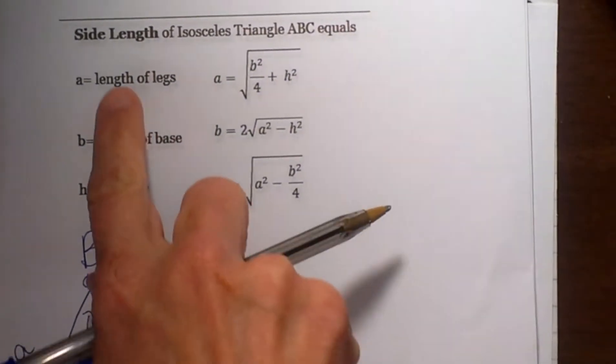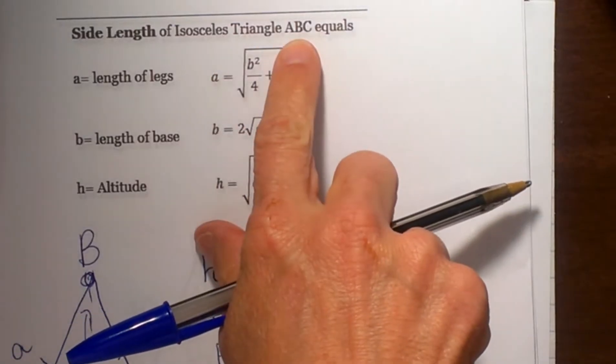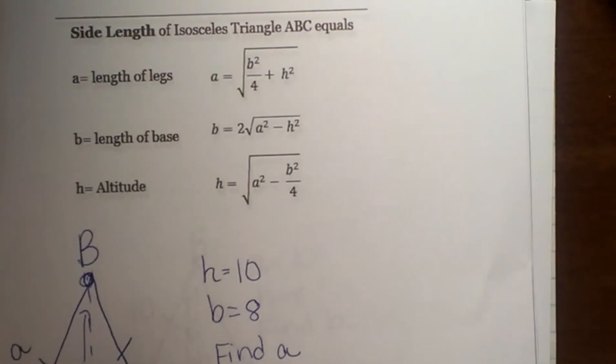Hi and welcome to Moomoo Math. Today we're going to look at how to find the side length of an isosceles triangle, and we're going to look at triangle ABC.